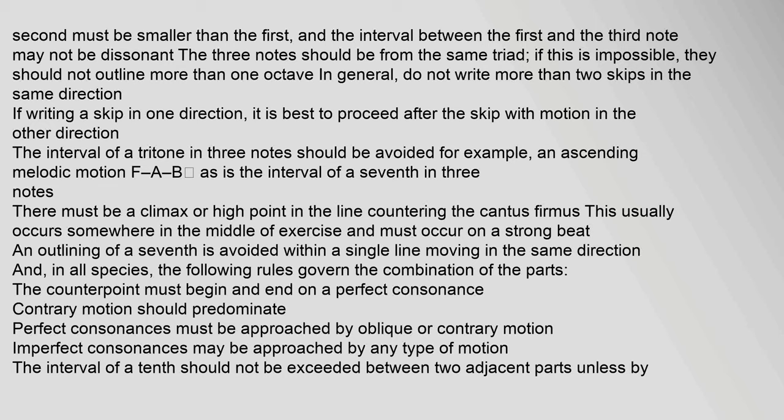The interval of a tritone in three notes should be avoided — for example, an ascending melodic motion F-A-B — as is the interval of a seventh in three notes. There must be a climax or high point in the line countering the cantus firmus; this usually occurs somewhere in the middle of the exercise and must occur on a strong beat. An outlining of a seventh is avoided within a single line moving in the same direction. The counterpoint must begin and end on a perfect consonance. Contrary motion should predominate. Perfect consonances must be approached by oblique or contrary motion; imperfect consonances may be approached by any type of motion.